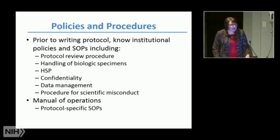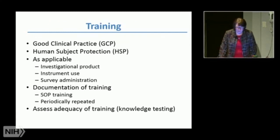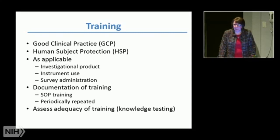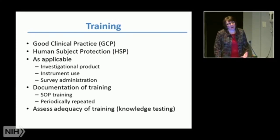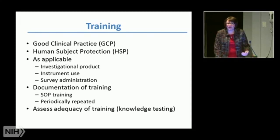A manual of operations can be very helpful, especially for multi-site clinical research studies. In terms of training, it's not just about human subjects protection, but also about GCP — good clinical practice. If it's an investigational product, or if there's a particular instrument or a specific EKG machine that the sponsor has given the site, how is training occurring related to that? If it's a patient-reported outcome — some type of PRO tool — are there survey administration instructions? How are people being trained so the tool is administered the same way at a site or across sites? And how are you documenting that training?